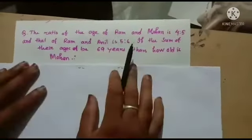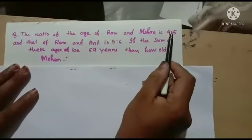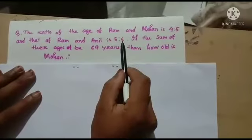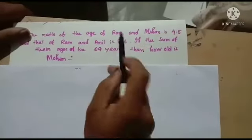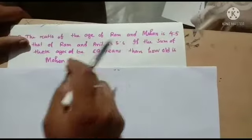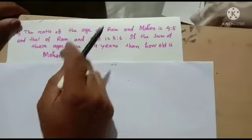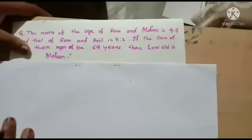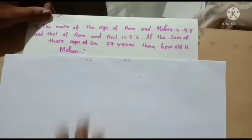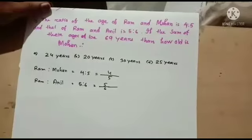The ratios of Ram to Mohan and Ram to Anil are given. With their total age being 69 years, we need to find Mohan's age by working with these ratios together.